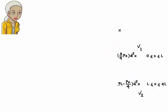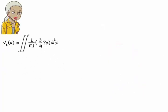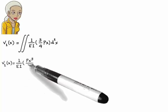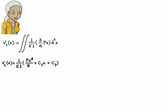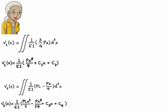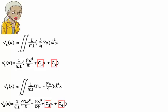Integrating v1 twice, we get v1(x) equals 1 over EI times (Px³ over 8 plus C1x plus C2). Integrating v2 twice, we get v2(x) equals 1 over EI times (PLx² over 2 minus Px³ over 24 plus C3x plus C4), where C1, C2, C3, and C4 are integration constants to be determined using four boundary conditions.